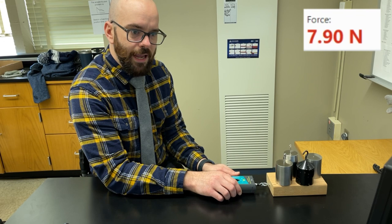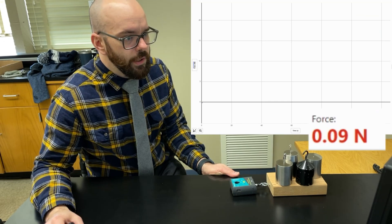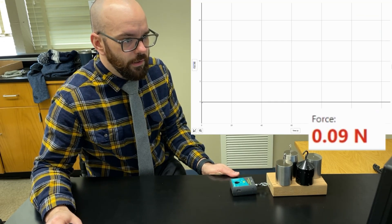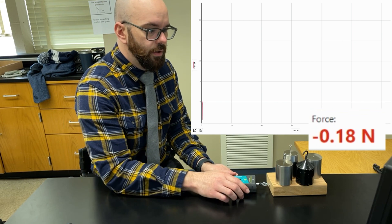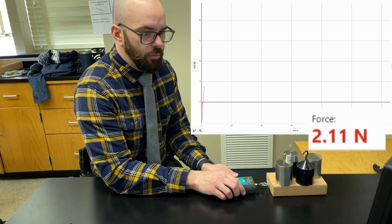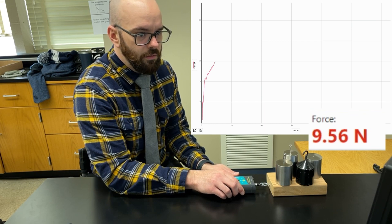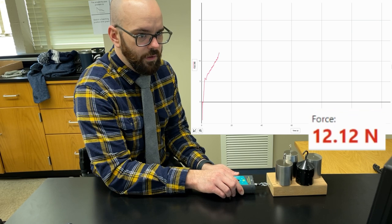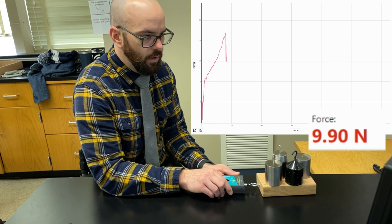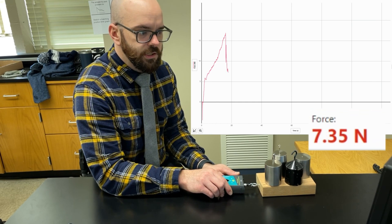Now I'm getting up to about eight newtons of friction force. Let me click collect on here, and we'll see a graph of all of this. So if I pull with three newtons, five newtons, six, seven, eight, nine, ten, eleven, twelve, thirteen, fourteen, fifteen, sixteen newtons — there it started to move.